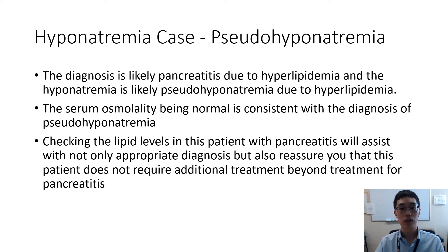The other differential diagnosis is of course DKA, but in this case the glucose is normal and the osmolality is normal, neither of which fits the picture of DKA. Since our most likely diagnosis is hypertriglyceridemia in this case, we are going to want to immediately check lipid levels and treat the patient accordingly for pancreatitis. We typically don't have to do anything else for the hyponatremia, and the serum sodium will usually correct itself as the lipid levels fall.